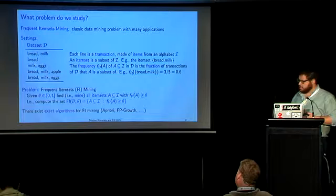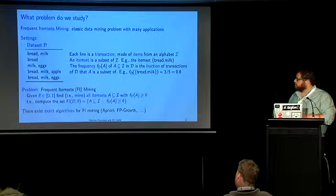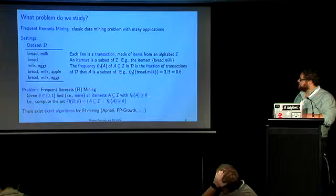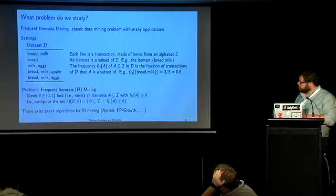The problem we are interested in is frequent itemset mining. You are given a minimum frequency threshold theta between 0 and 1. The frequency is also between 0 and 1 because it's a fraction. We want to compute the set of all itemsets that have frequency at least theta — greater or equal to theta. I denote this set with the notation: frequent itemsets computed on the dataset with respect to a minimum frequency threshold theta.